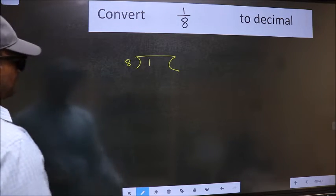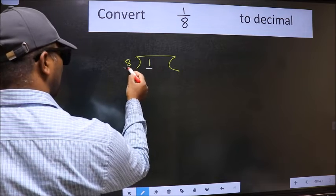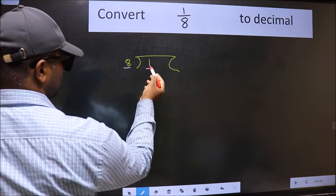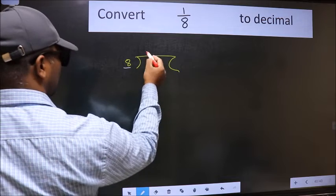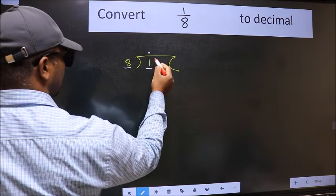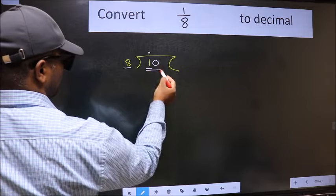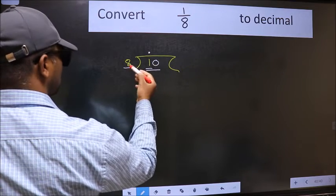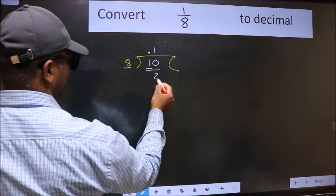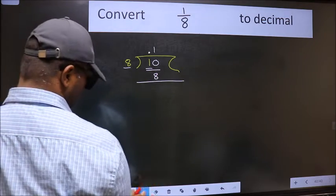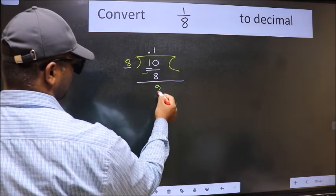Next. Now here we have 1 and here 8. 1 is smaller than 8, so we have to put dot and take 0. So 10. A number close to 10 in the 8 table is 8 — 8 ones are 8. Now we should subtract. We get 2.